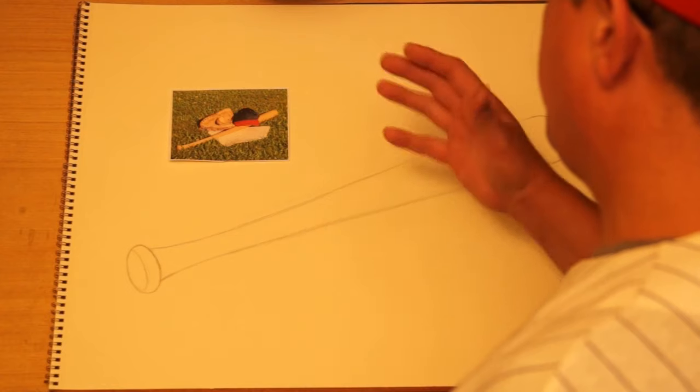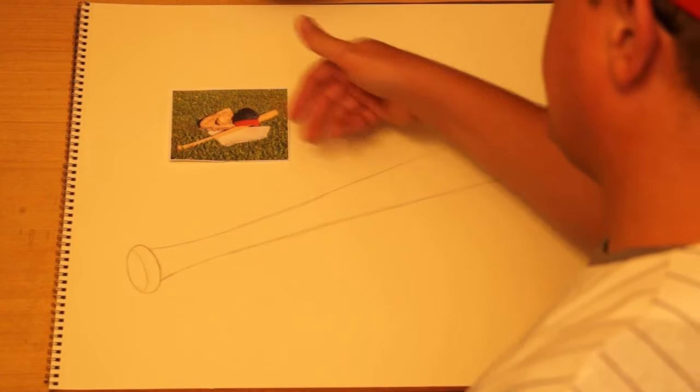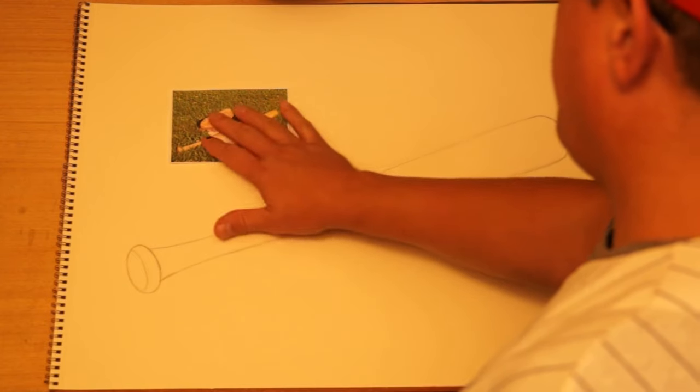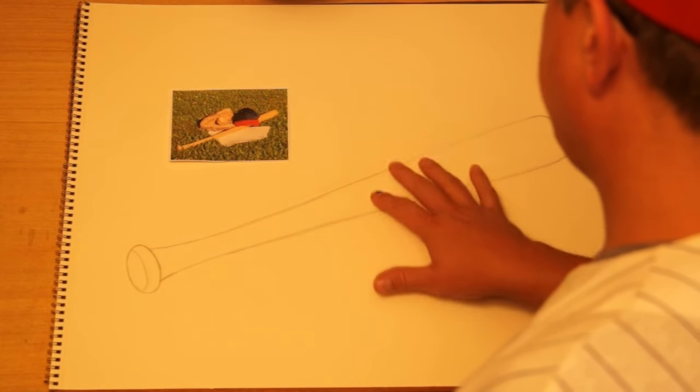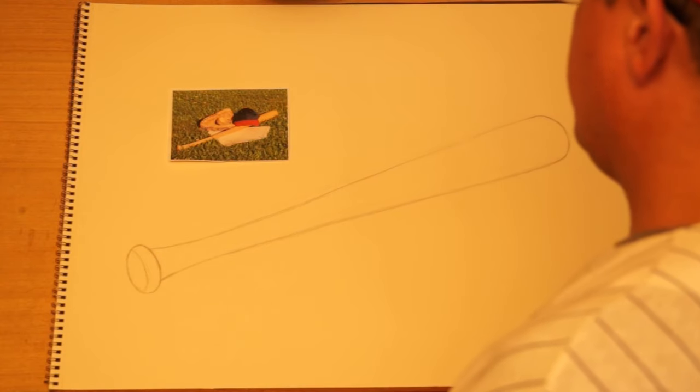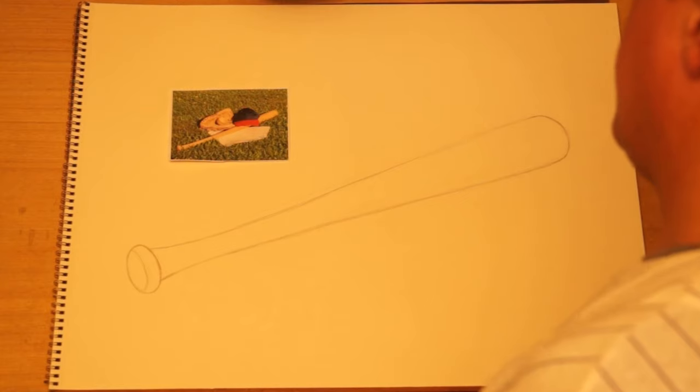And so what we're going to be doing each day, we're going to be doing a different object that is related to baseball. And then I'll be adding that, looking at the photograph and then putting it into place in our big picture. So this is the bat that we've drawn today. And so that's our big picture for today.